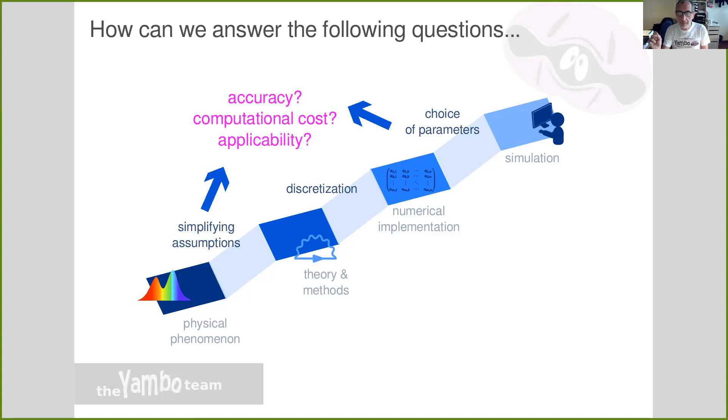All these steps actually are connected to the accuracy of your calculations and also to the computational cost and applicability. So you have to answer the question, is my number accurate enough to be published? Can I get an accurate enough number with a computational power I have? What is the computational cost? And more importantly, is what I'm doing applicable to the experimental result I want to interpret?